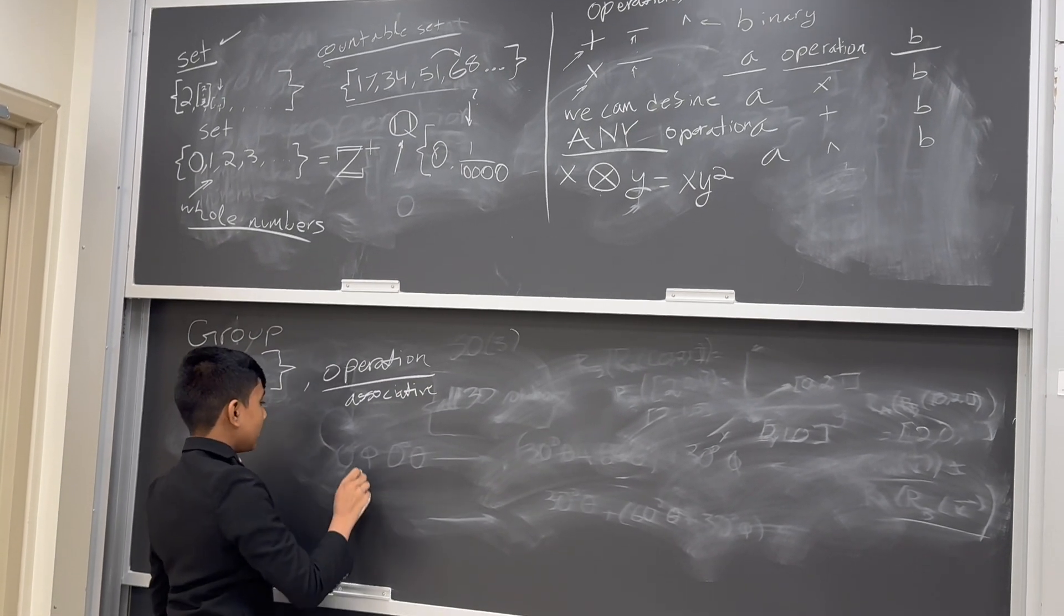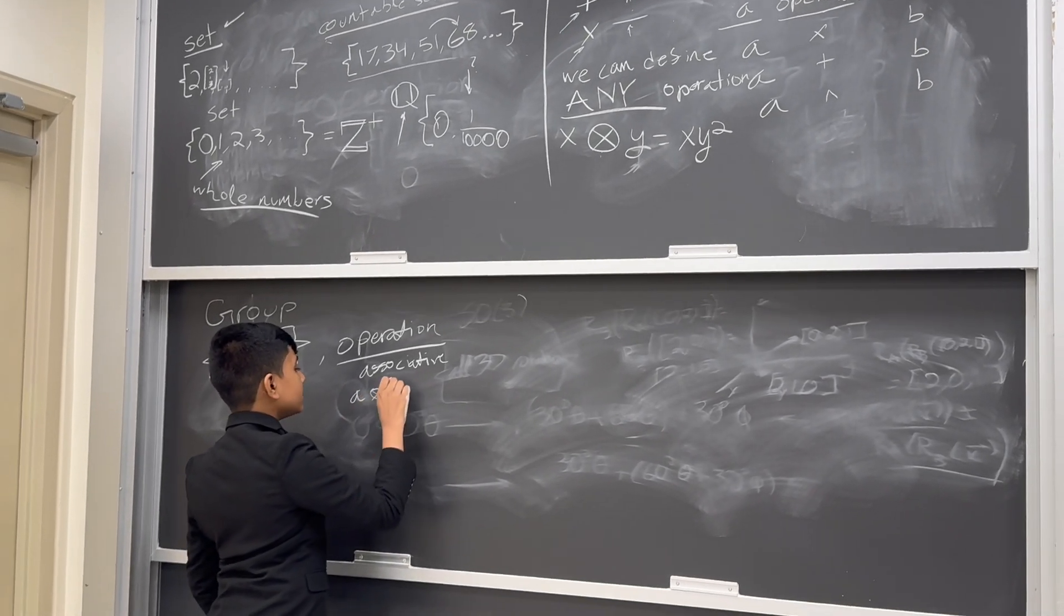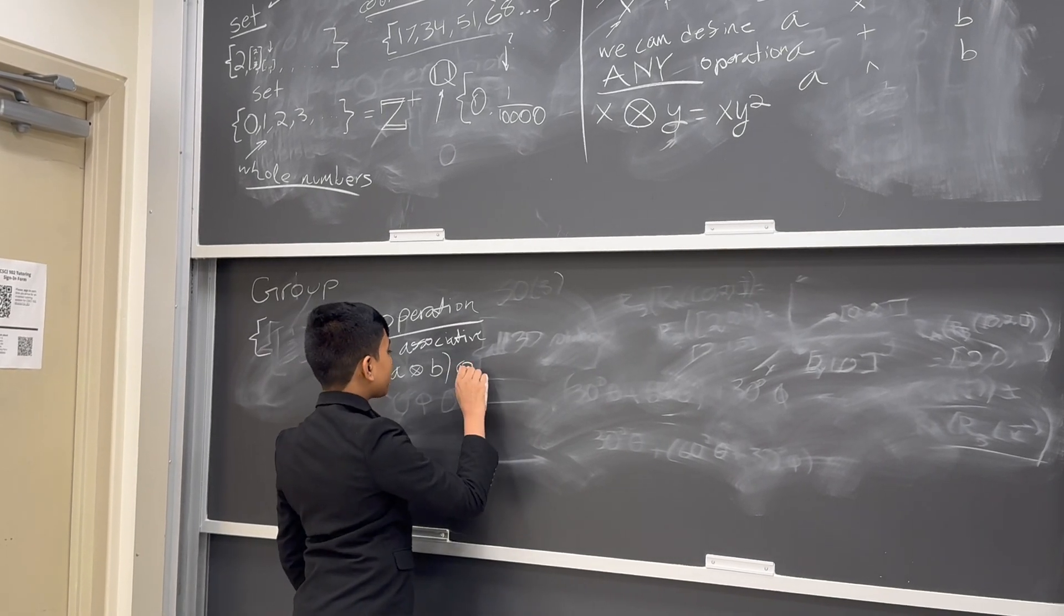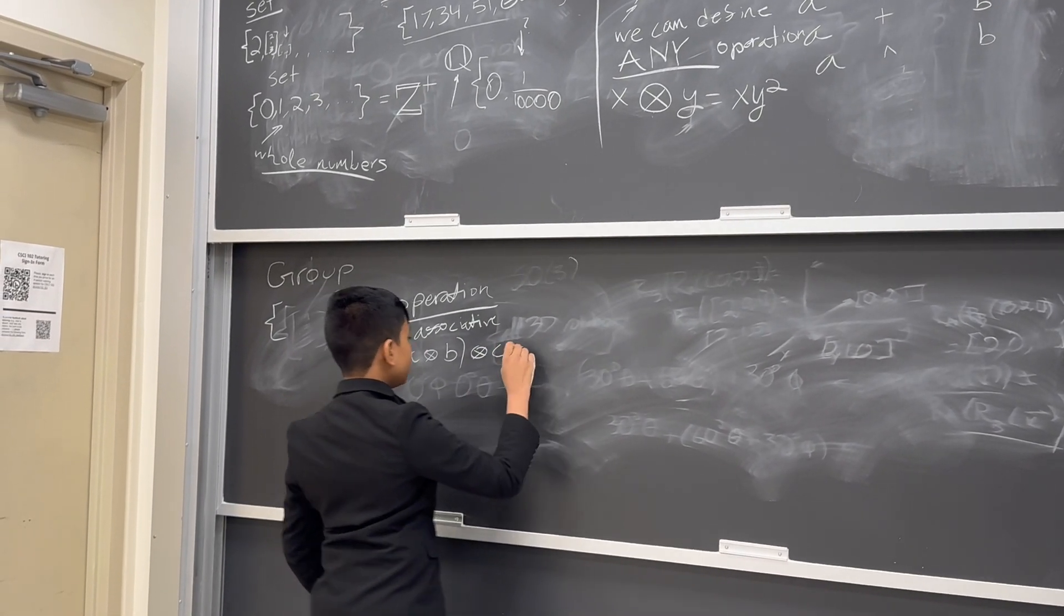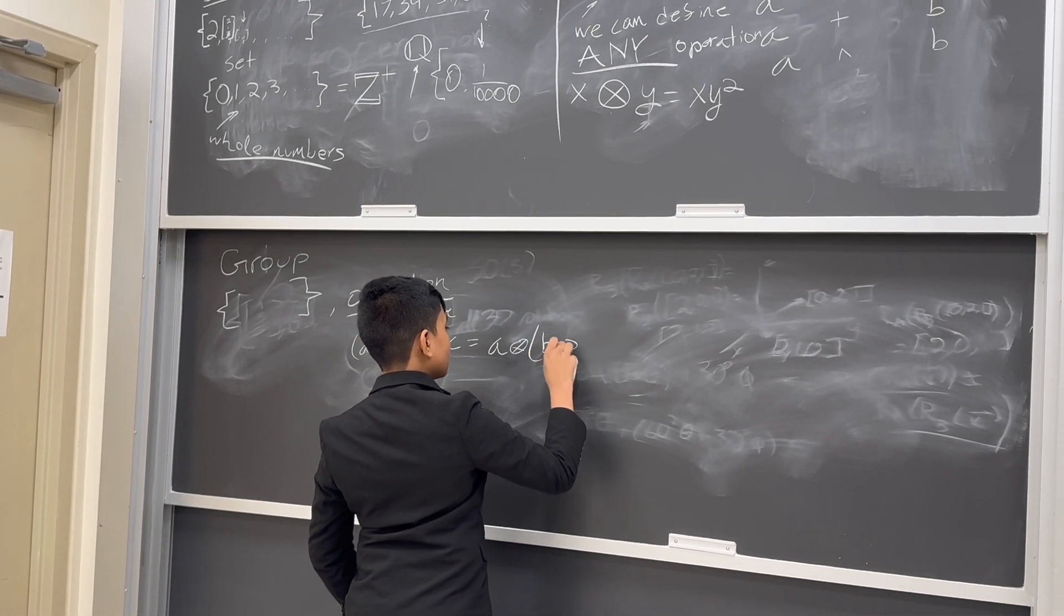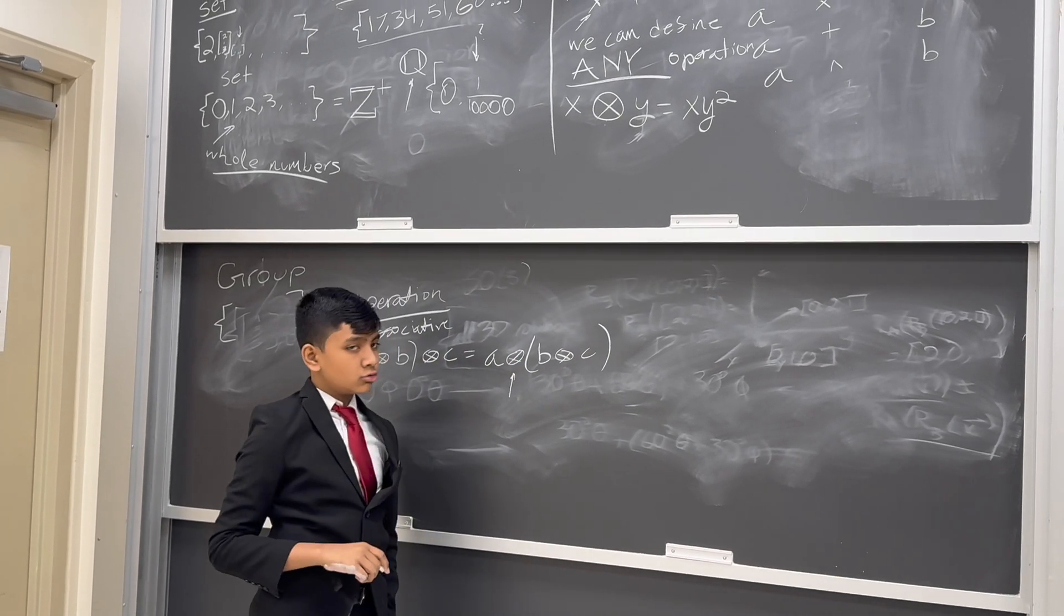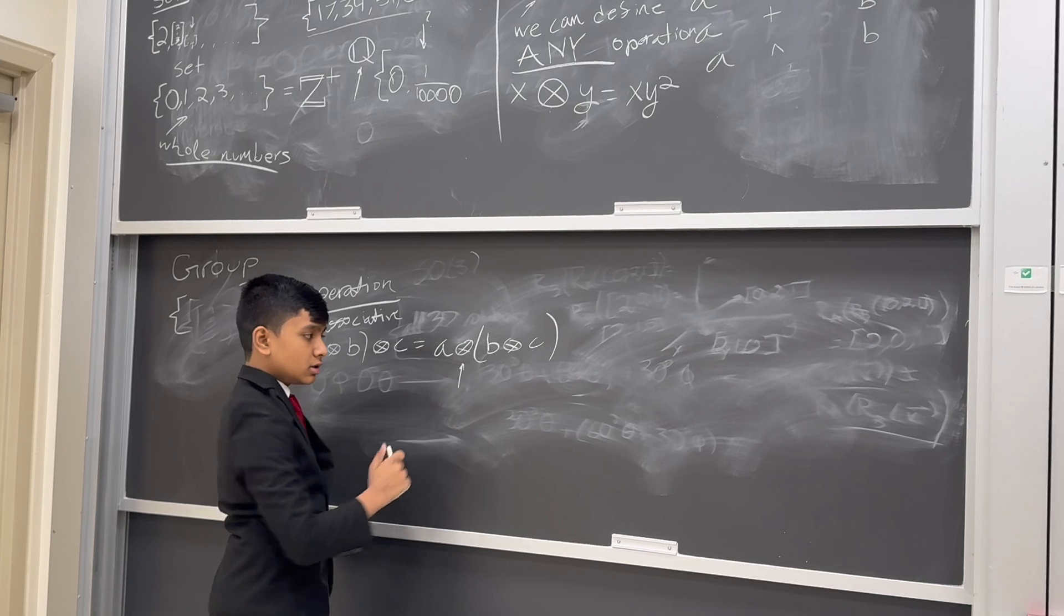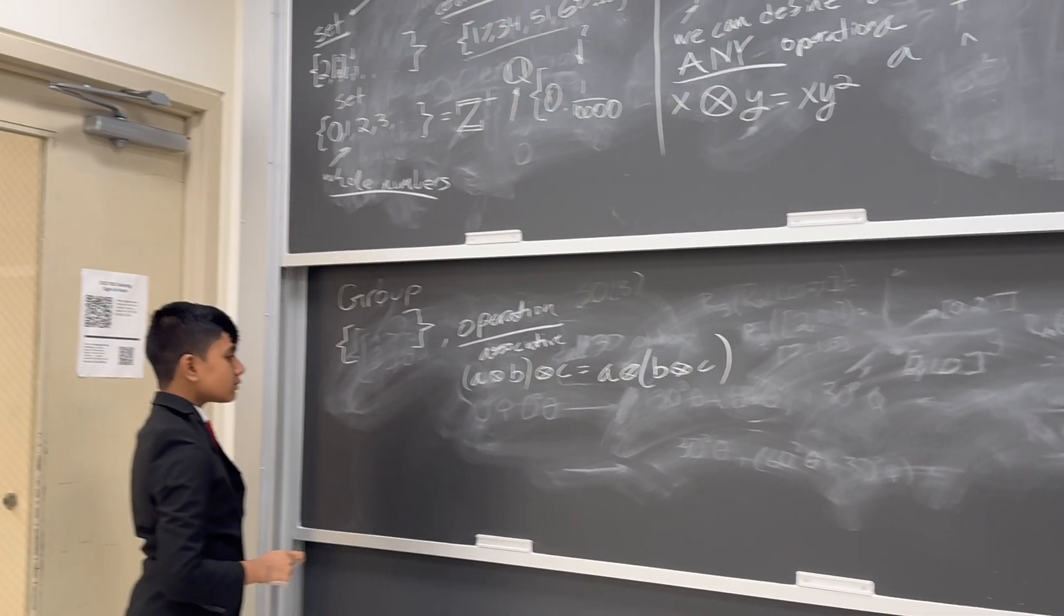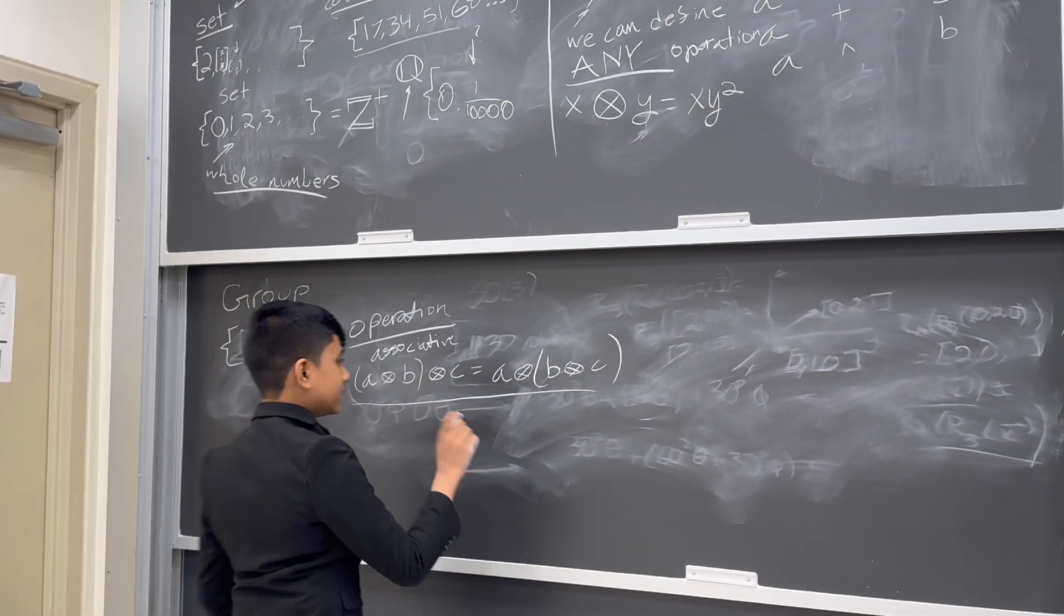That means that if we have A operation B, parentheses, operation C, this should be equal to A operation parentheses B operation C. If you write the cross product like this, I'm so sorry for your family's loss. So, this is what associativity means.